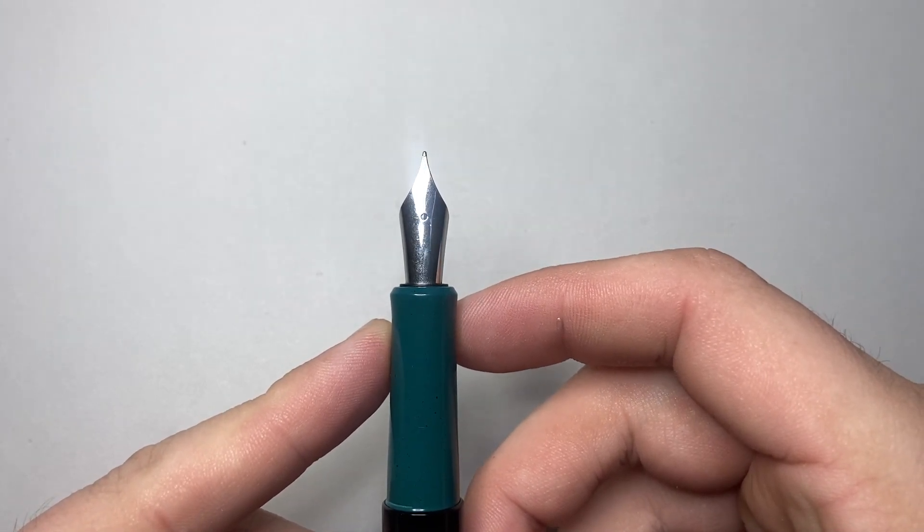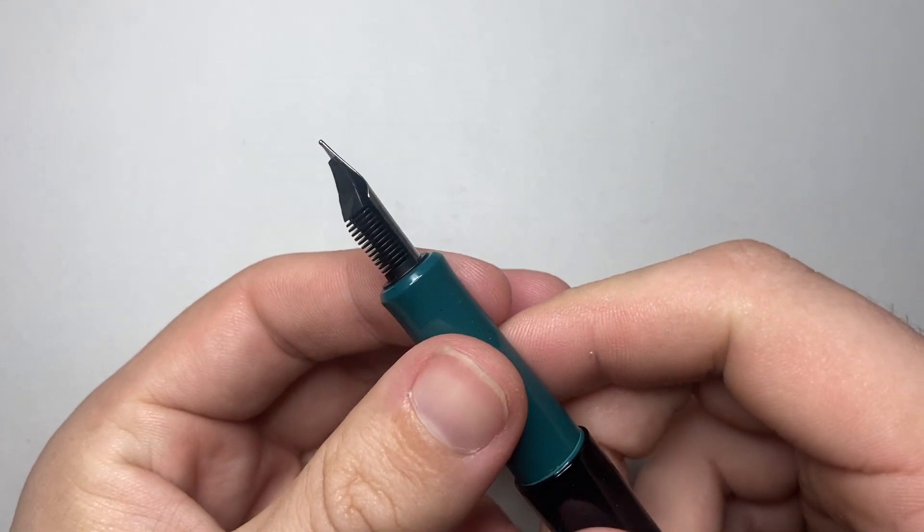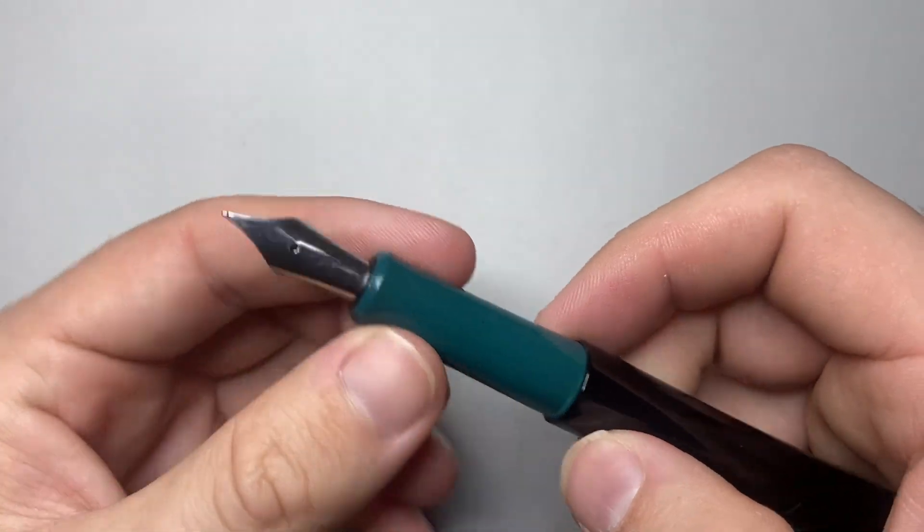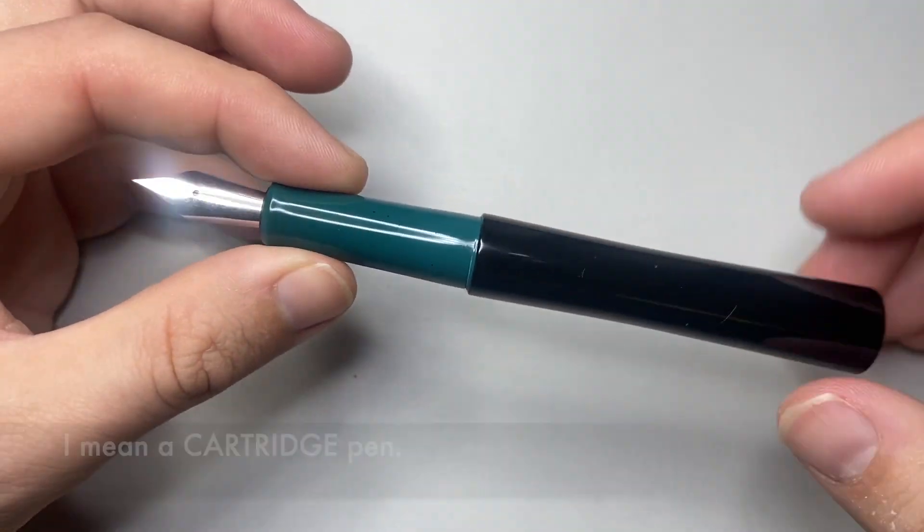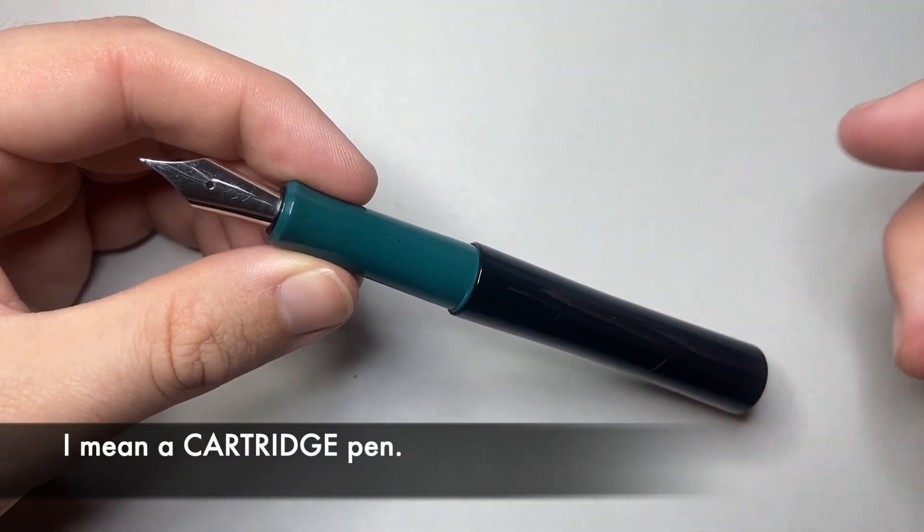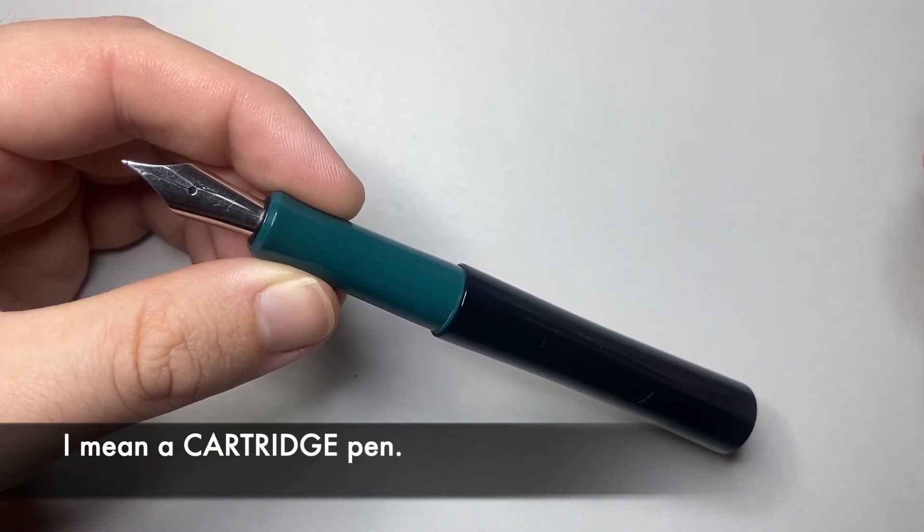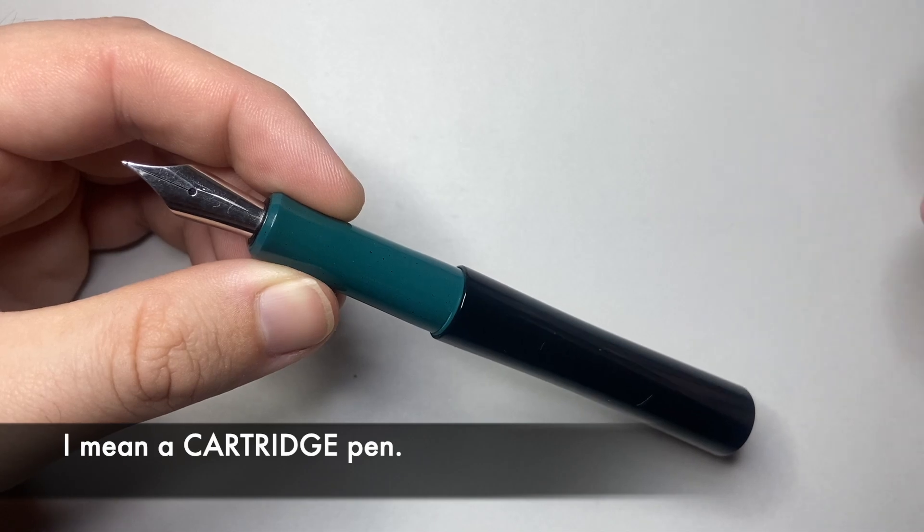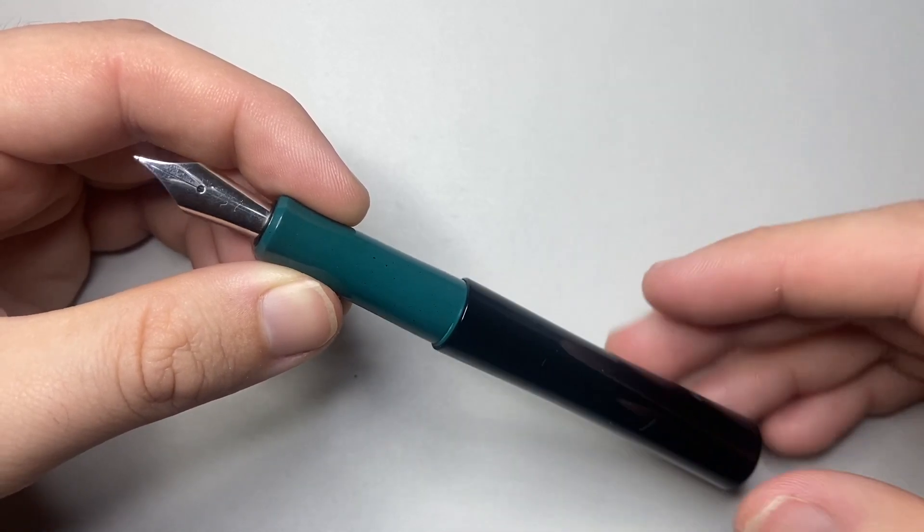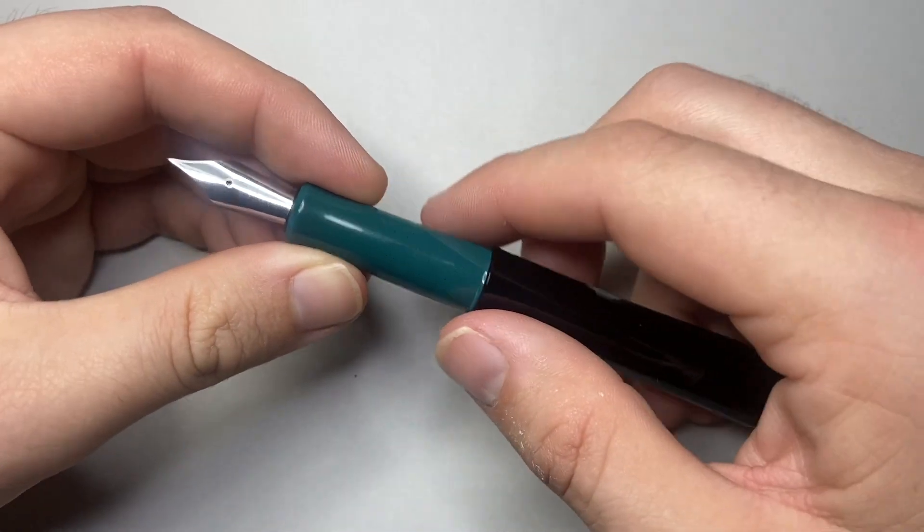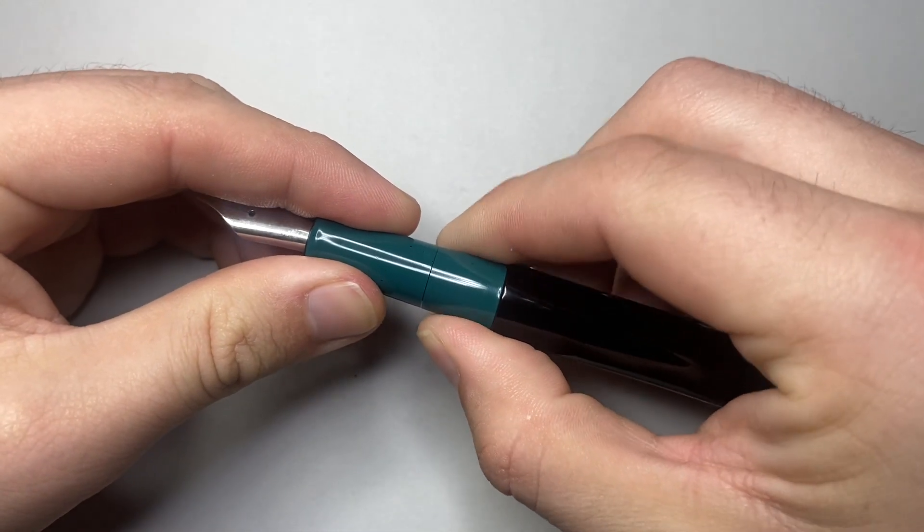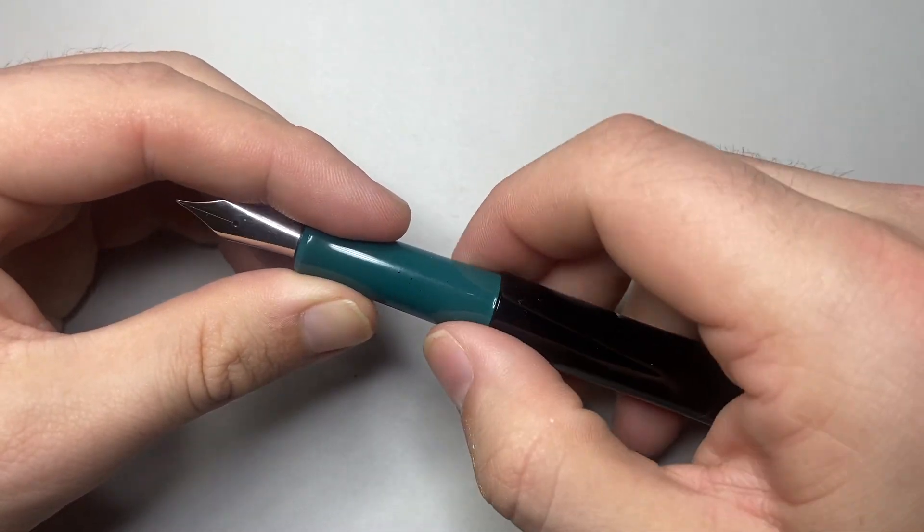It tapers down and then flares out, giving you this beautiful unbranded, very clean steel number 6 Bock nib with a plastic feed. The pen is a converter pen, I will say converter not cartridge converter, because there are very few small converters that will fit in this.